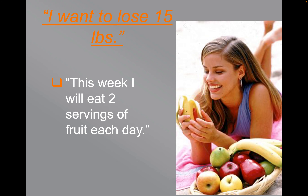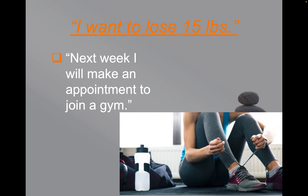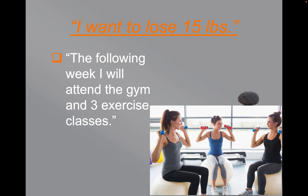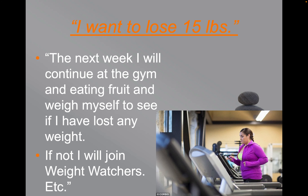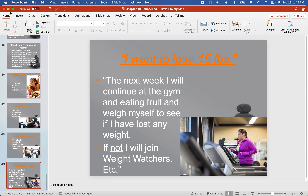Example of sequential goals: this week I will eat two servings of fruit each day; next week I will make an appointment to join a gym; the following week I will attend the gym and three exercise classes; the next week I will continue at the gym and eating fruit and weigh myself to see if I have lost any weight — if not, I will join Weight Watchers, etc. That is the end of the chapter. Don't forget to get your histories in. The problem that your character has must be something you've never had a problem with yourself — choosing a problem you've potentially suffered from or are too close to may cause a relapse, and we certainly don't want that to happen.